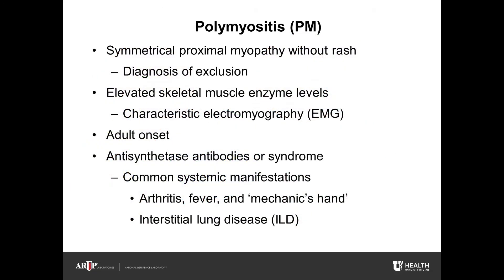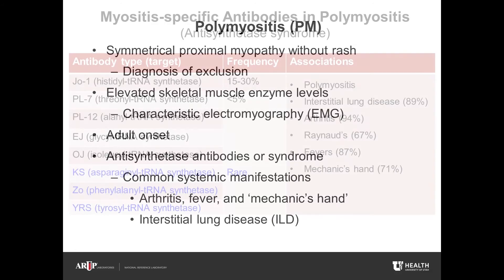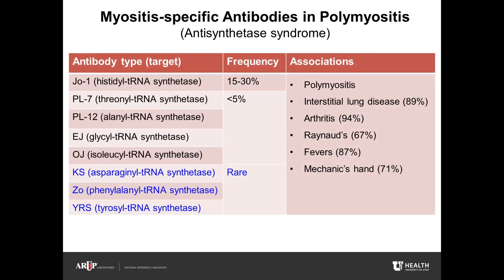Polymyositis is a term that was generally used to denote all myositis that were not dermatomyositis or sporadic inclusion body myositis. Traditionally, myositis is described as presenting with weakness in proximal muscles that evolves over weeks to months and affects adults but rarely children. Patients are usually positive for anti-synthetase antibodies previously described and suffer from a constellation of symptoms collectively referred to as anti-synthetase syndrome, which includes myalgias, muscle weakness, and a combination of core symptoms including interstitial lung disease, Raynaud's phenomenon, seronegative arthritis of the digital joints, fever, and mechanic hands. The table shows the defined anti-synthetase antibodies in polymyositis, their frequency, and the clinical features of anti-synthetase syndrome.